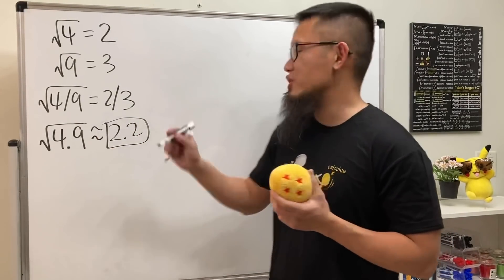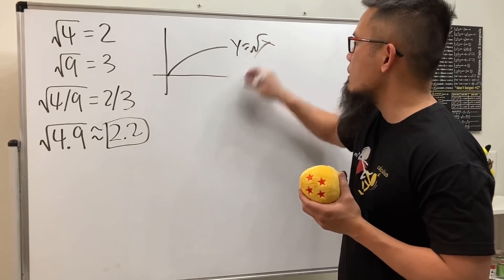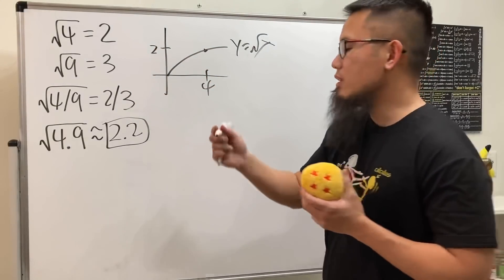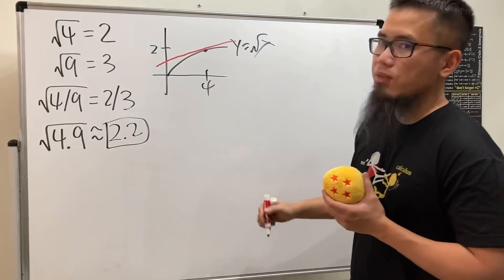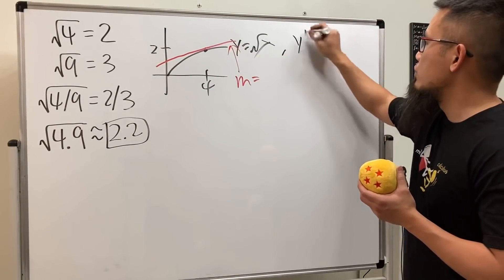Check this out. We are going to first consider the graph of √x, and when x equals 4, we know y equals 2. Now, tangent line business - we need an equation for this. First we need a slope, and the slope is exactly the derivative. So let's do the derivative.